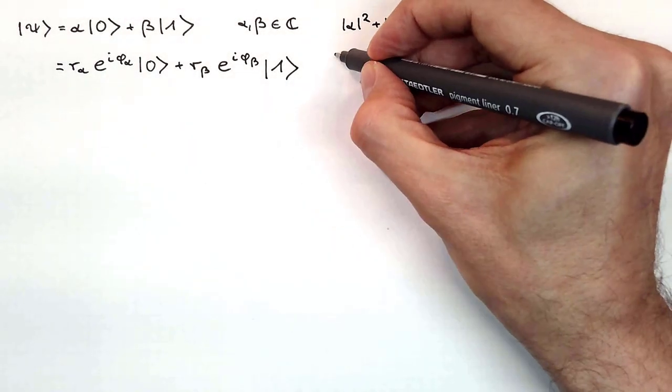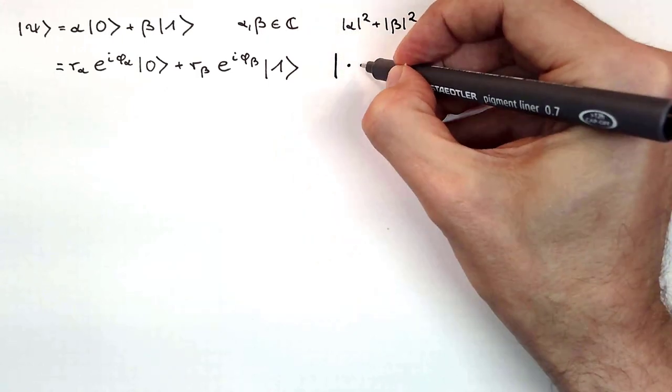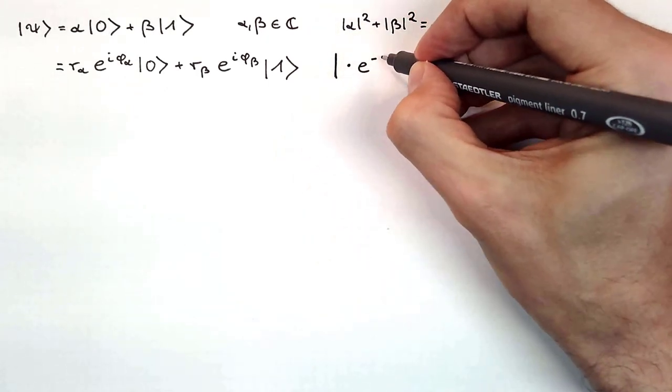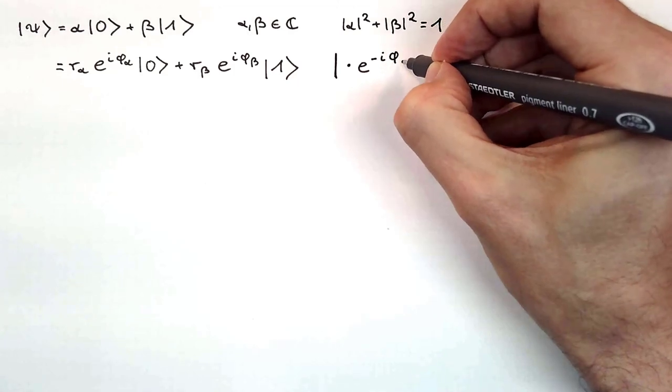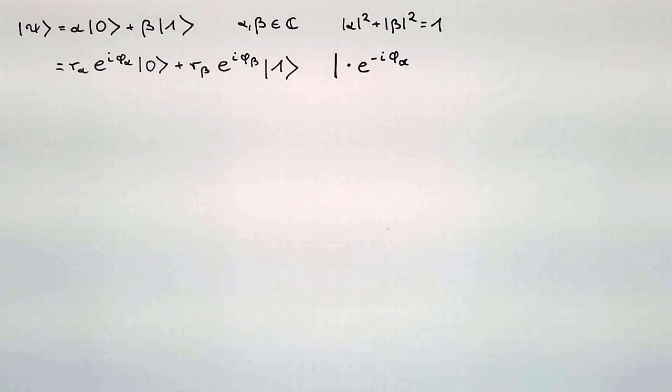Now, here comes a trick. We multiply this sum with a complex number that has an absolute value of 1. This number is e to the minus i phi_alpha. By doing this, all physical properties of the qubit stay unchanged. What we change is only the argument or phase of both complex amplitudes. The absolute value of these numbers remain unchanged, and therefore, the probability to measure the qubit in the corresponding basis state.